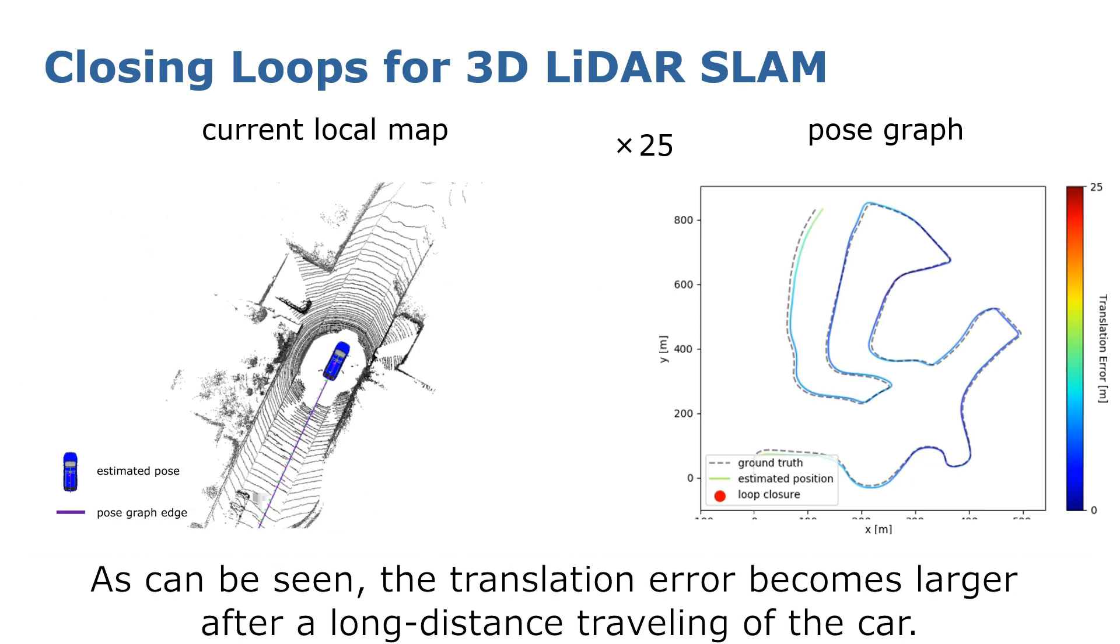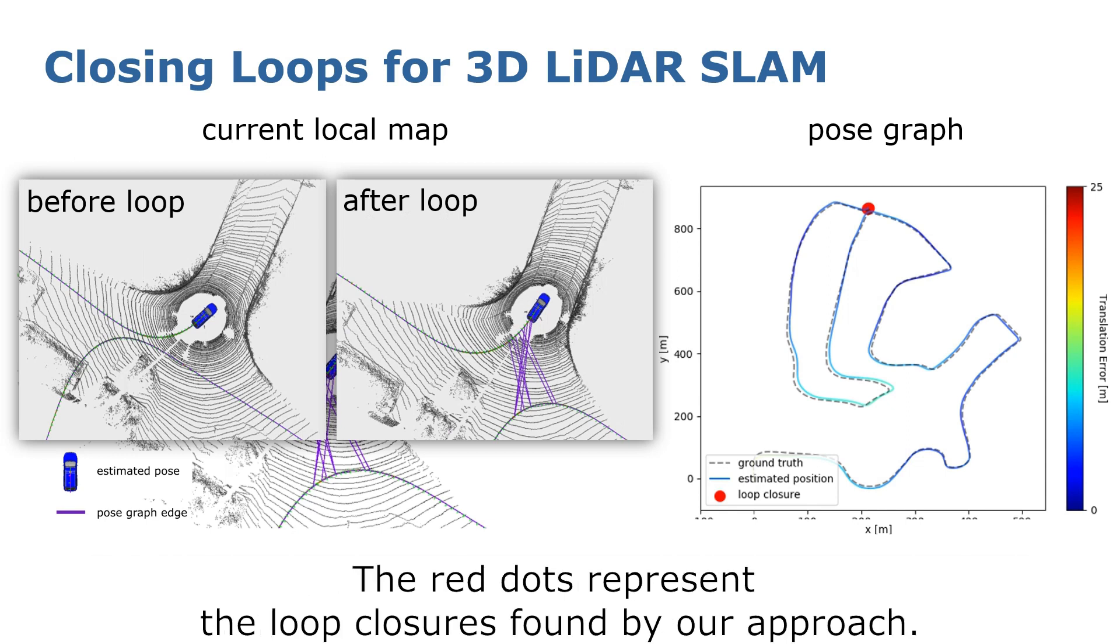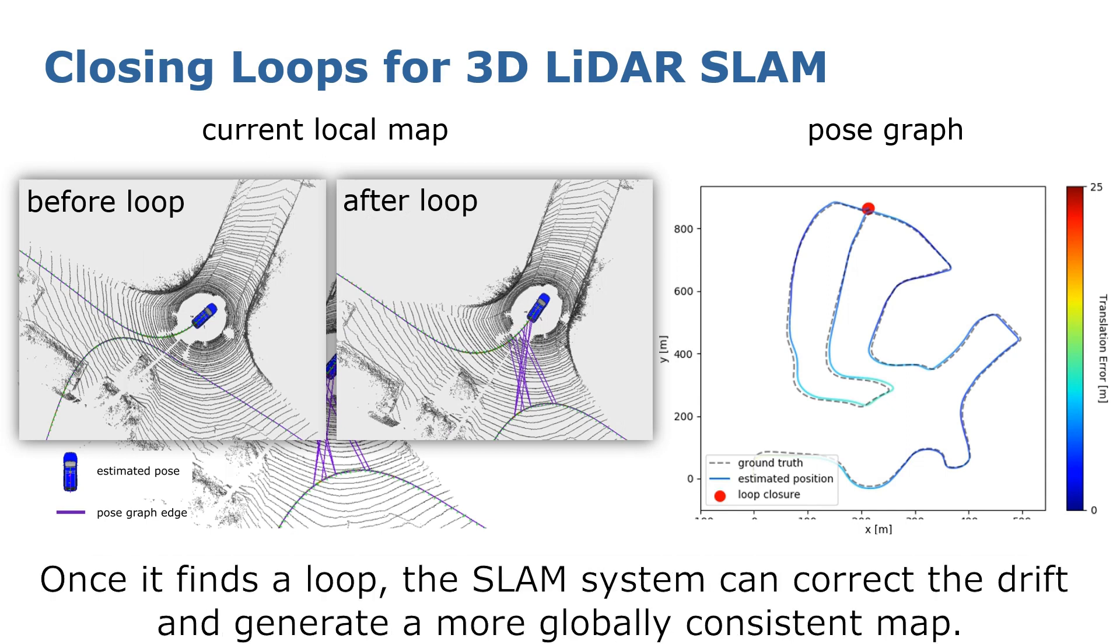The colors of the pose graph represent the translation error with respect to the ground truth. As can be seen, the translation error becomes larger after long distance traveling of the car. The red dots represent the loop closures found by our approach. Once it finds a loop, the SLAM system can correct the drift and generate a more globally consistent map.